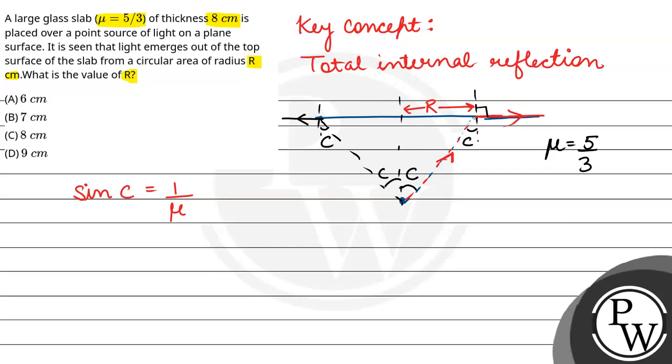So if we proceed, mu given is 5 by 3, sin c equals to 3 by 5. Here the value of c is 37 degrees.